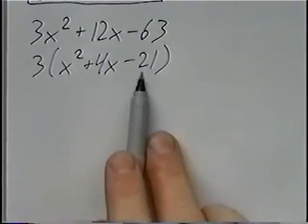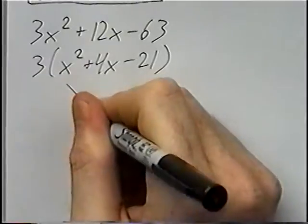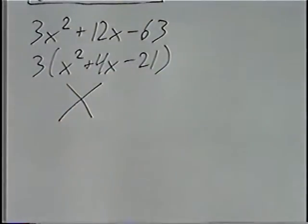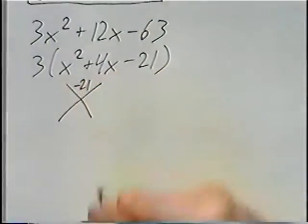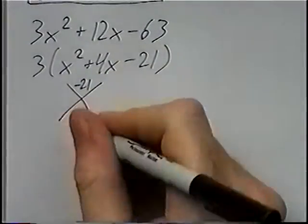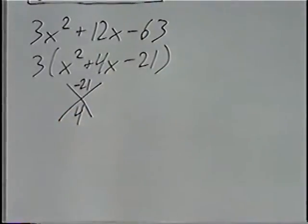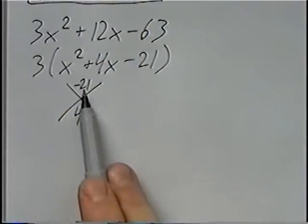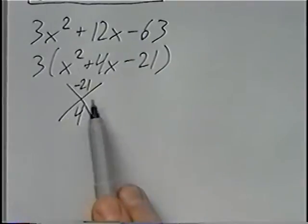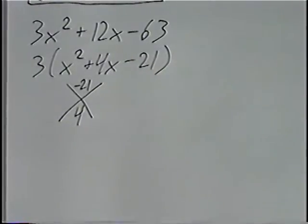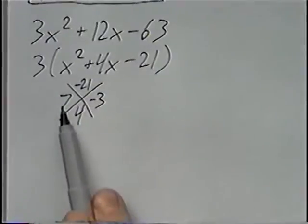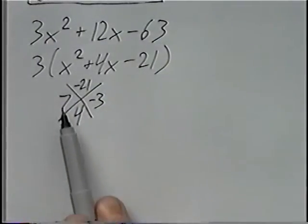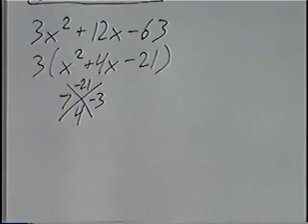Factoring the trinomial inside the parentheses, we can use the diamond method again. The last number, negative 21, goes on top of the X, and the middle number, 4, goes on the bottom. We want two numbers that multiply to get negative 21 and add to get 4. Those numbers are 7 and negative 3: 7 times negative 3 is negative 21, and 7 plus negative 3 is 4.